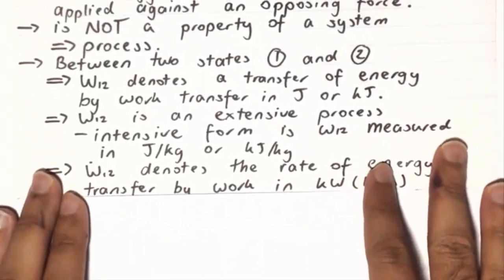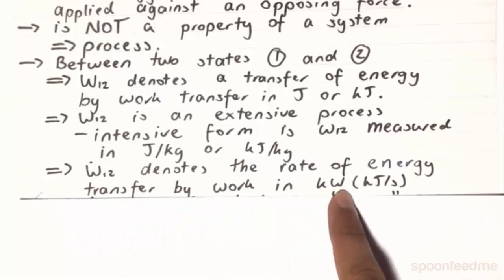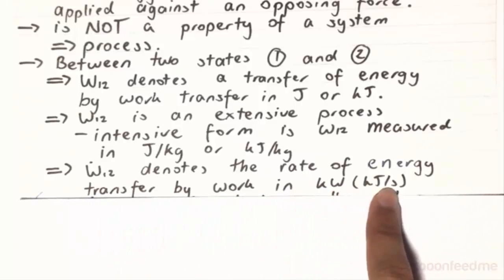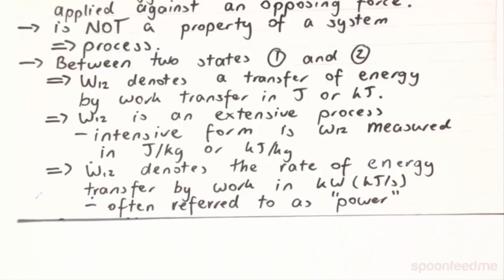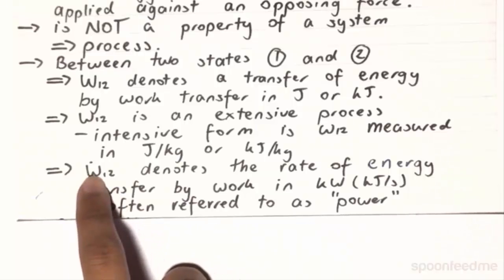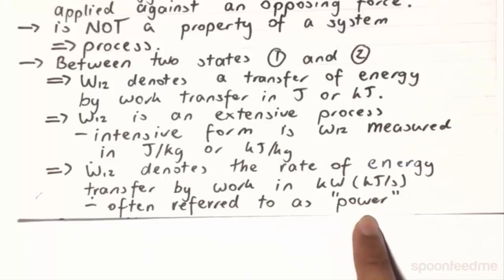And just like our Q dot 1, 2, our work dot 1, 2 denotes the rate of energy transfer by work, and it's going to be in kilowatts, or kilojoules per second, or if you are working in joules per second, it will be in just watts. In this case, the work 1, 2 dot is also often referred to as the term power.